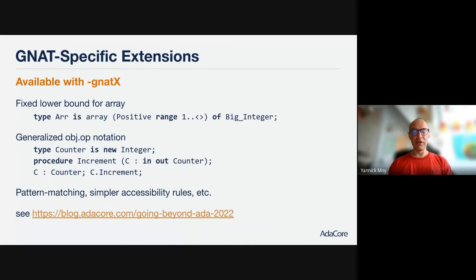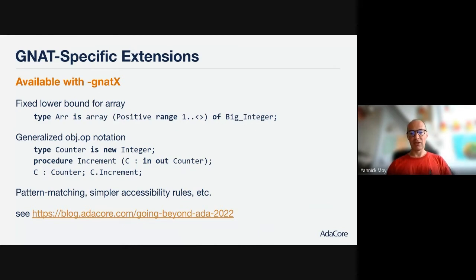We have other bigger extensions of Ada still in progress, like pattern matching and simpler accessibility rules that don't depend on dynamic accessibility being checked for anonymous access types. If you want to know more about that, you can read the blog post 'Going Beyond Ada.'